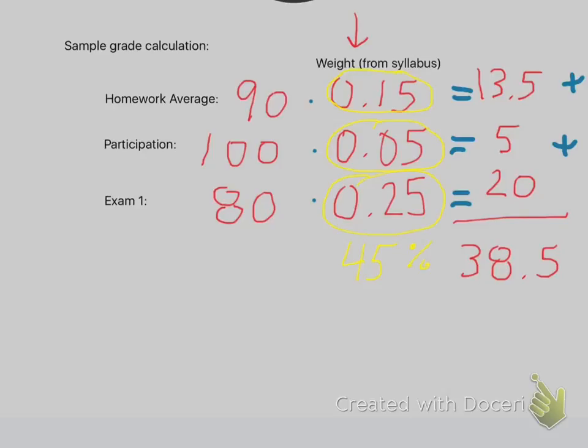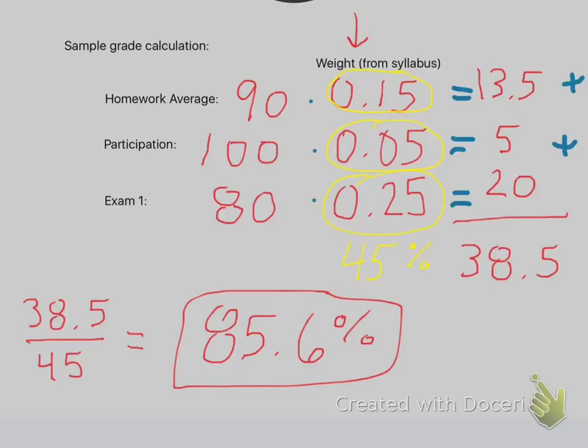So to figure out what grade you have right now, you need to take your 38.5 and divide it by the 45. So you have about an 85.6% right now in the class.